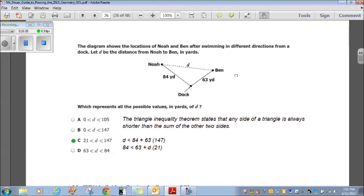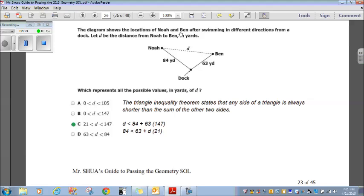So, let's see. The diagram shows the locations of Noah and Ben after swimming in different directions from a dock. Let D be the distance from Noah and Ben in yards. Okay. Here's the dock. There's Noah. Here's Ben. That's the distance between the two. Okay. Which represents all the possible values in yards of the distance between Noah and Ben. Now, you remember with triangles, triangle inequality theorem states that any side of a triangle is always shorter than the sum of the other two sides.